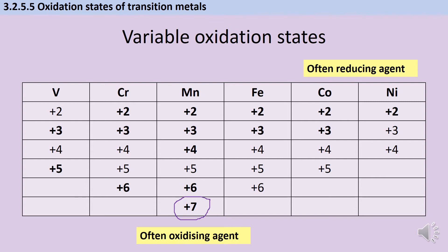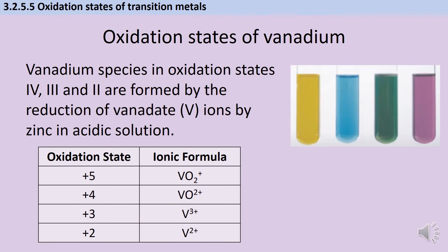Species with a much lower oxidation state are far more likely to be good reducing agents. For this part of the course, AQA expects you to know about two key examples in more detail, and the first one is the oxidation states of vanadium. Vanadium is relatively unique in that it has four stable oxidation states, and each one has a characteristic colour when the ions are in solution.